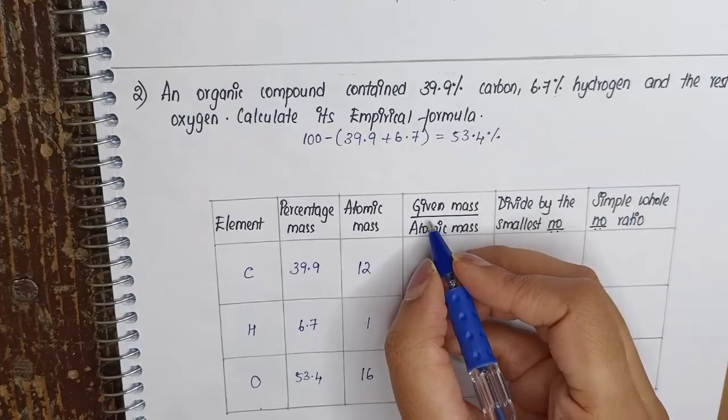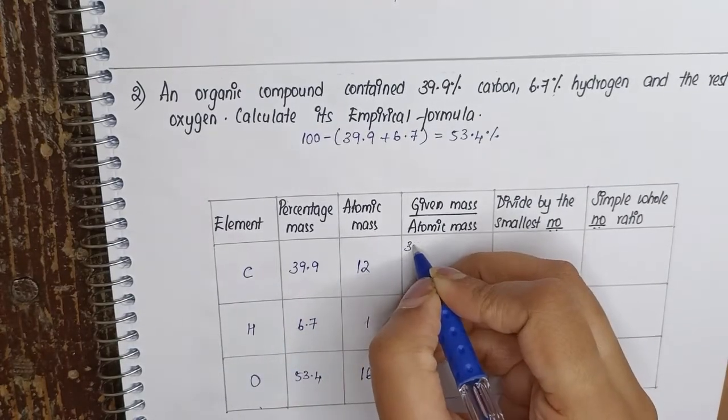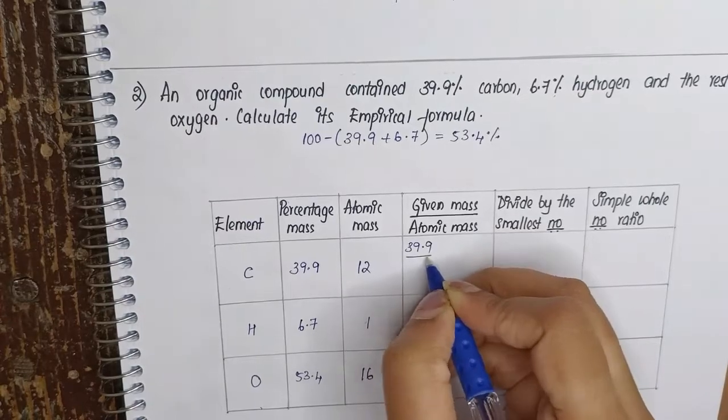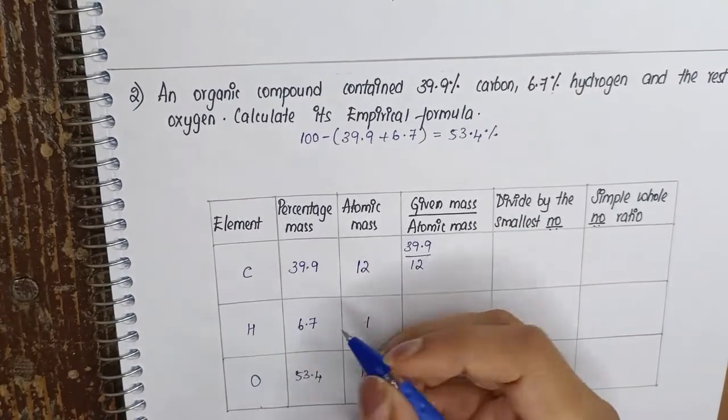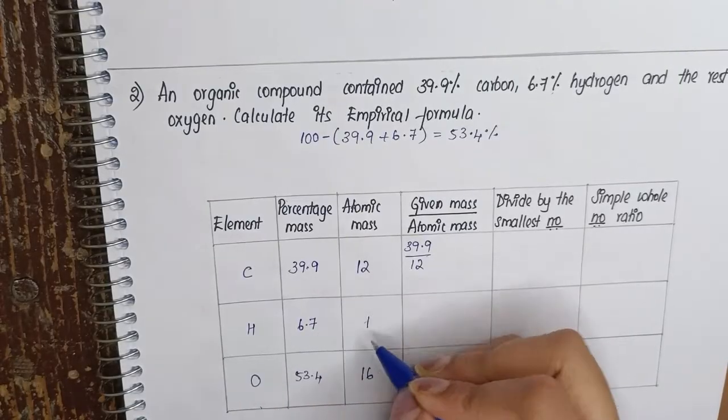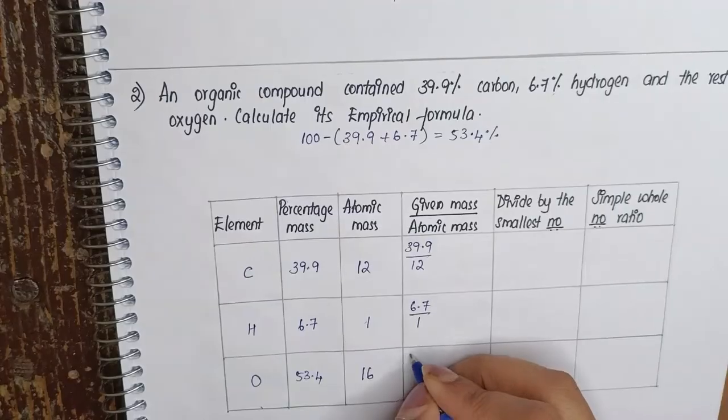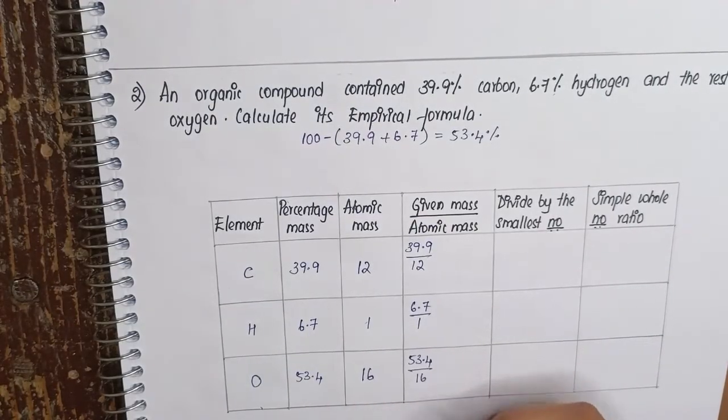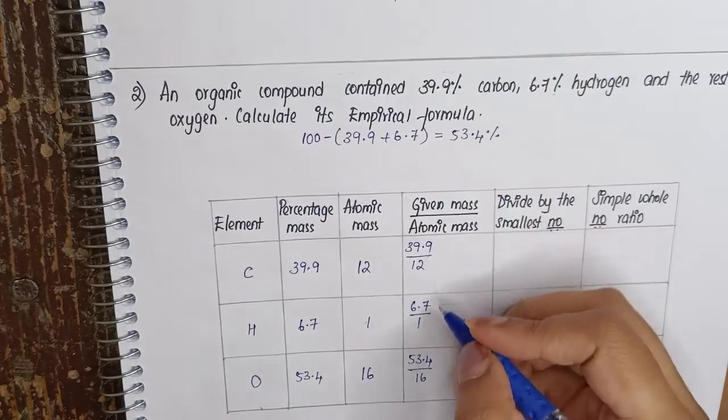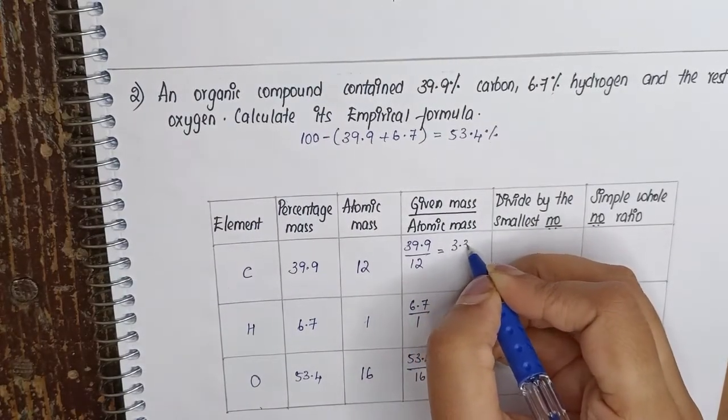Now we'll calculate the number of moles, which is given mass divided by atomic mass. So this is 39.9 divided by 12, here it is 6.7 divided by 1, and here it is 53.4 divided by 16. When we calculate this, you will get 3.33.